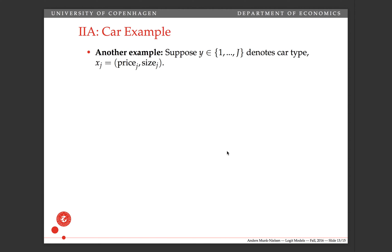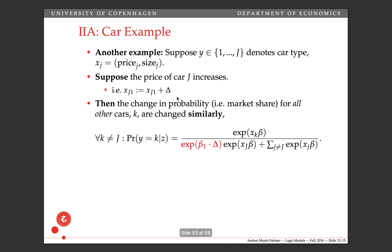A different example, which also illustrates the independence of irrelevant alternatives, is again suppose that y equals the car type and x has the price and the size of the car. And then suppose that only one car gets an increase in the price. So the price of car j, the first characteristic of car j, increases from xj1 to xj1 plus delta.